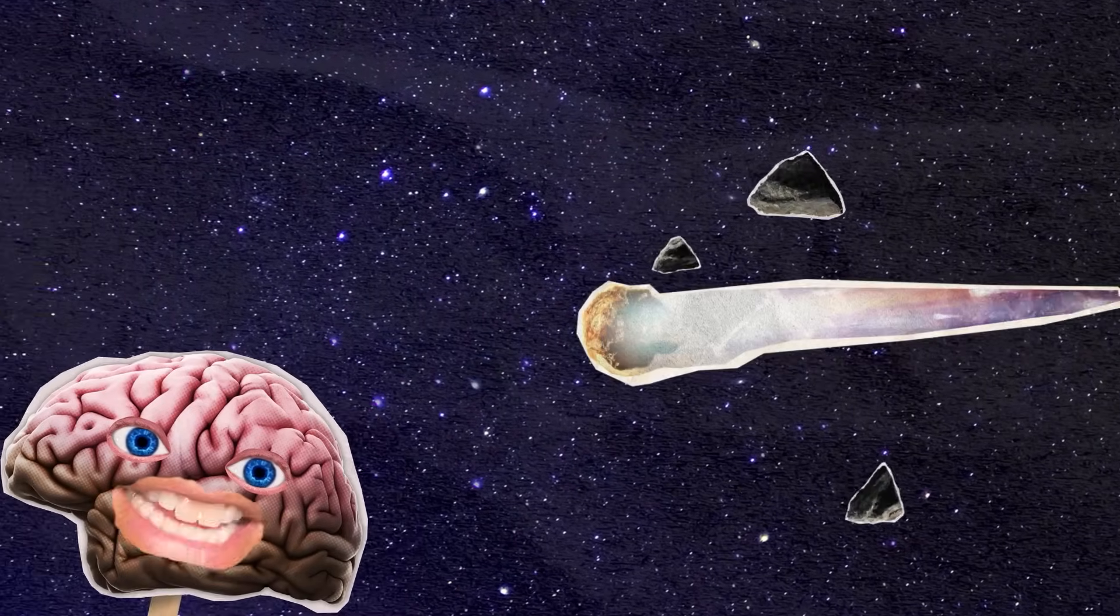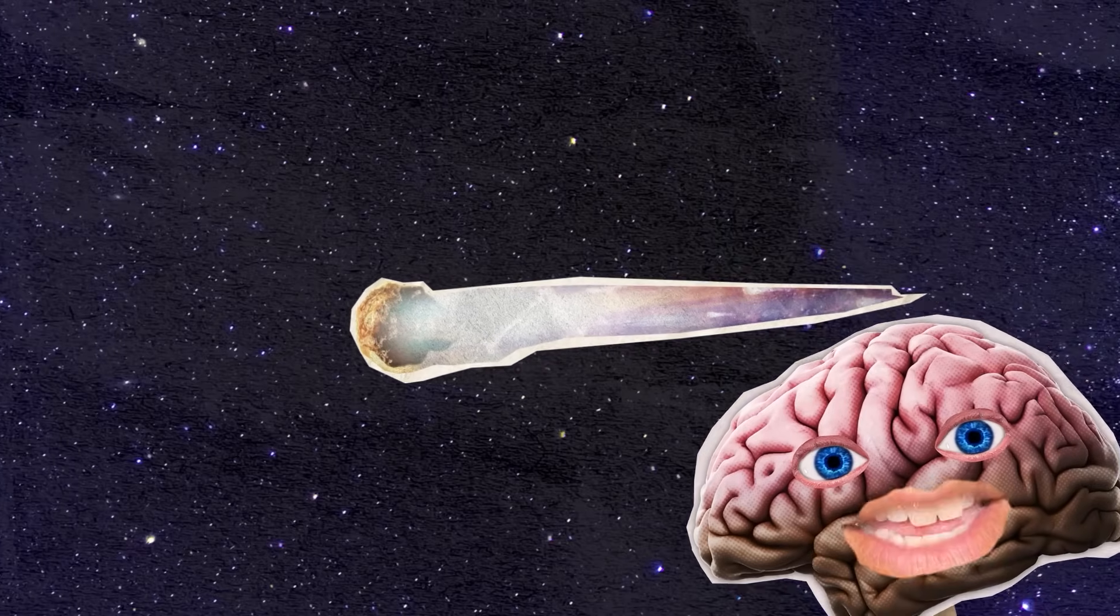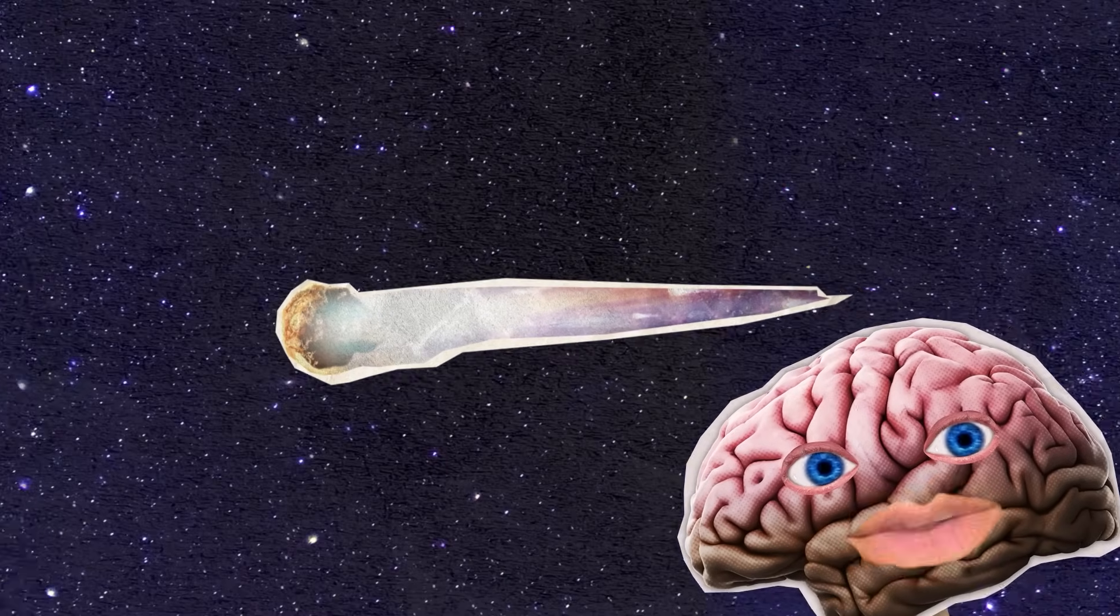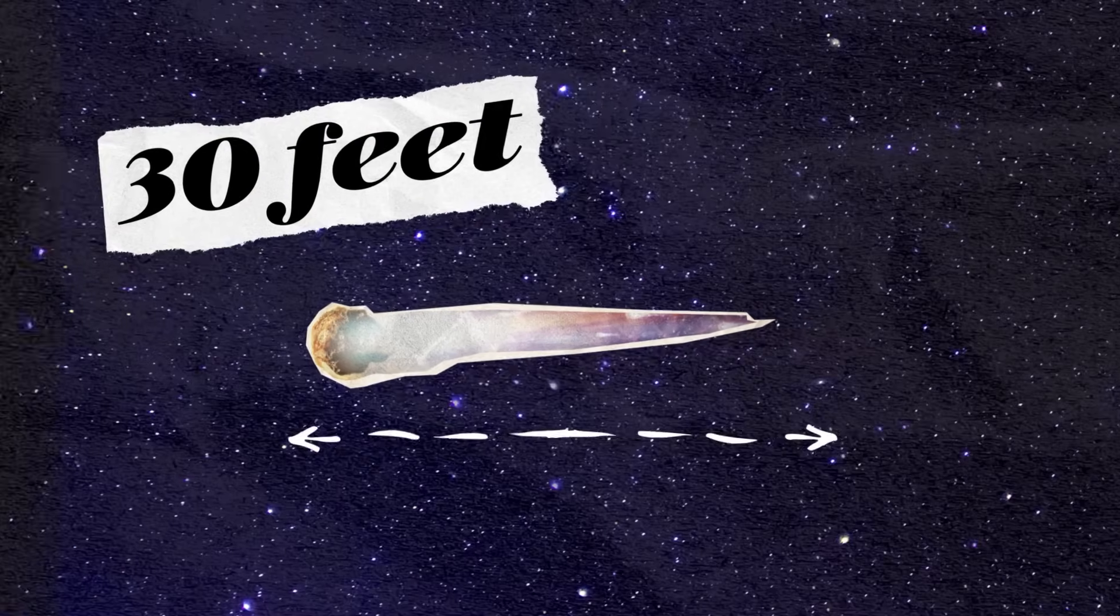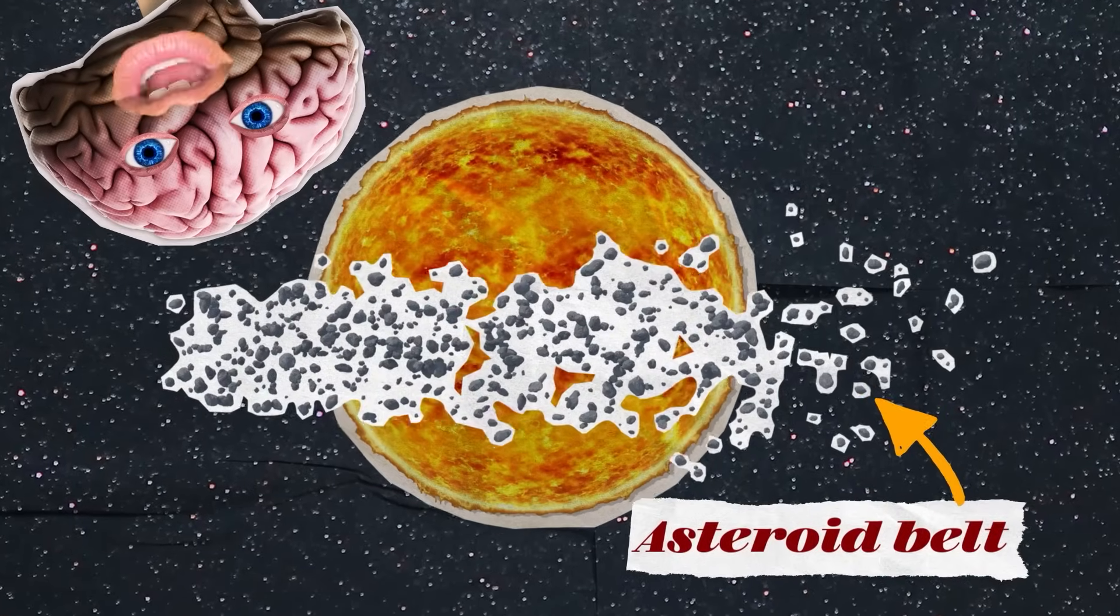Asteroids are small, rocky, and metallic objects that fly through outer space. They are the leftover rubble from planets and moons from when the solar system was forming billions of years ago, and they are the most ancient objects in outer space. Asteroids range in size from about 30 feet to 300 miles wide, and they orbit the sun in large numbers on the asteroid belt.